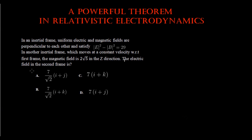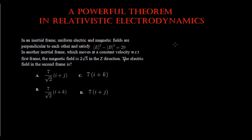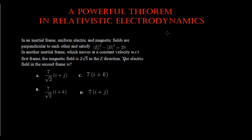The first question is: in an inertial frame, uniform electric and magnetic fields are perpendicular to each other and satisfy modulus of E squared minus modulus of B squared equals 29, in some units. In another inertial frame moving at constant velocity with respect to the first, the magnetic field is 2 root 5 in the z direction.